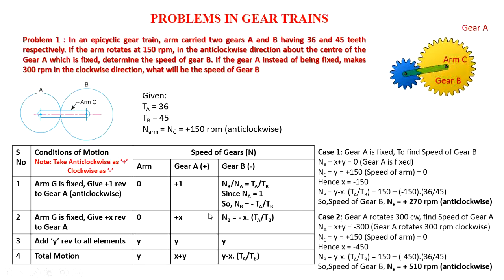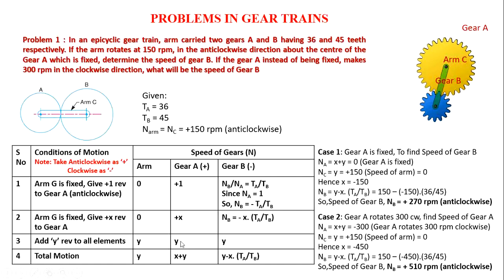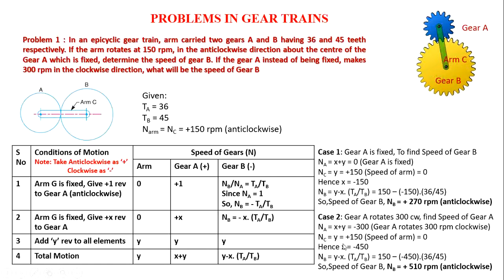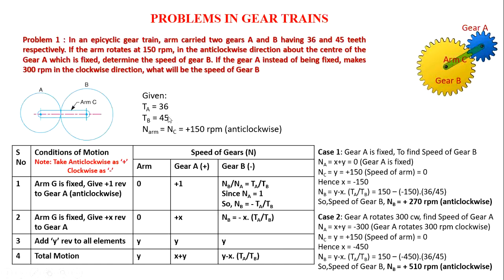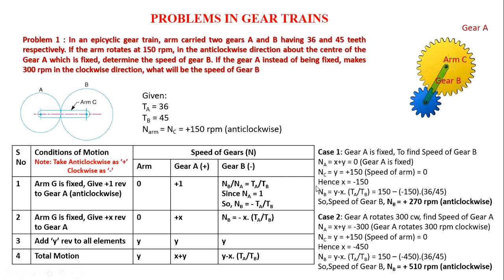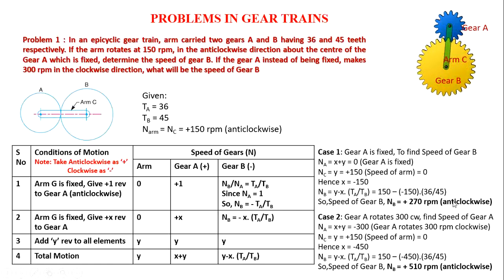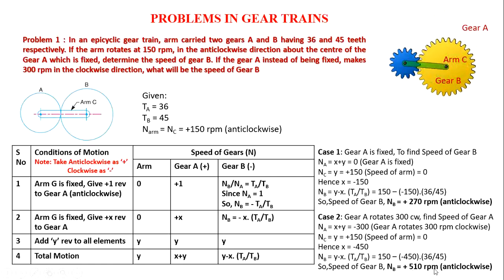For the second case, if gear A is rotating with 300 RPM clockwise, then X plus Y equals minus 300, and Y equals plus 150 (arm speed remains the same). Substituting Y gives X equals minus 450. Substituting into NB equals Y minus X times TA/TB, we get NB equals plus 510 RPM anticlockwise. So if gear A is fixed, gear B is 270 RPM anticlockwise; if gear A rotates at 300 RPM clockwise, gear B is 510 RPM anticlockwise.